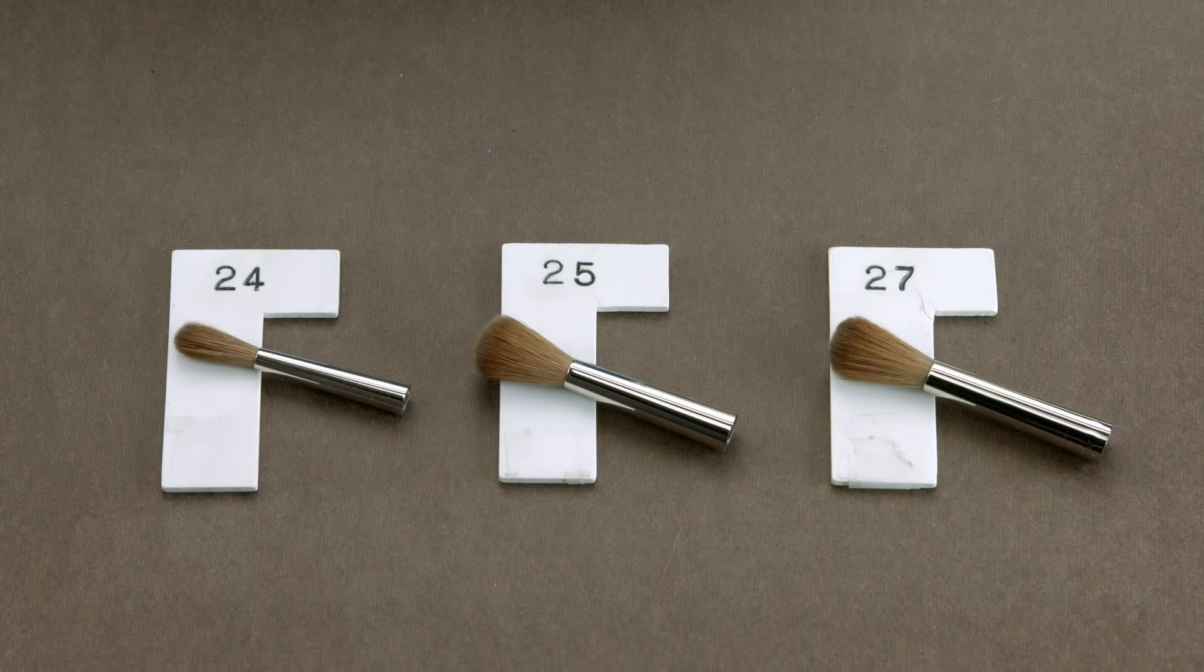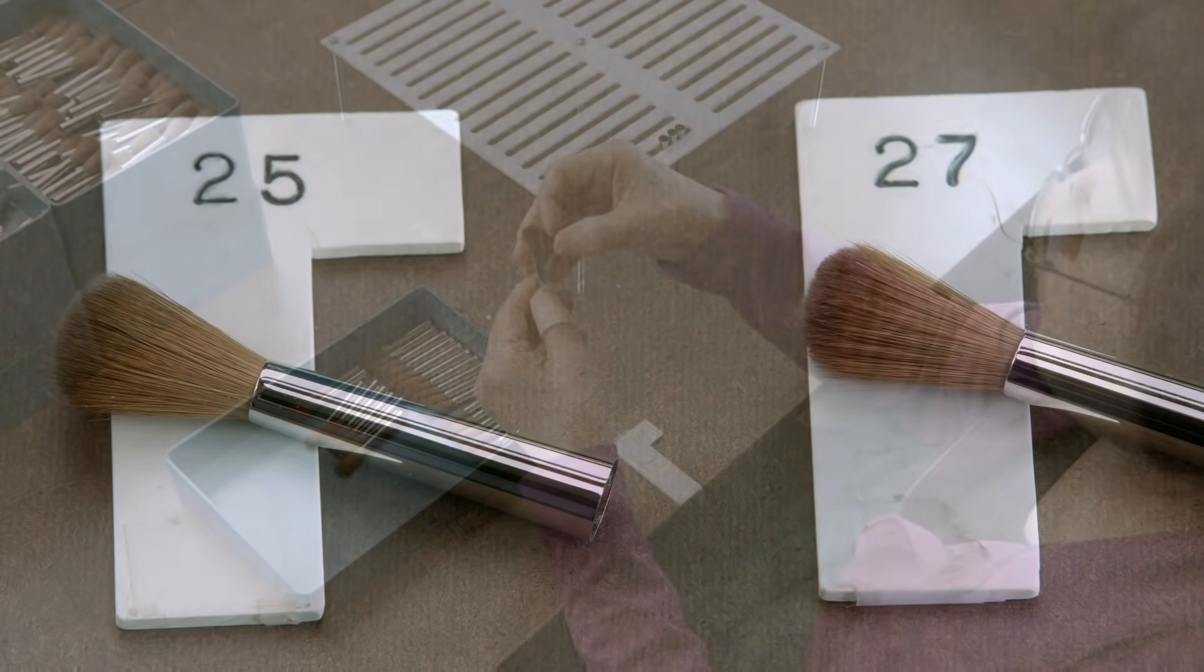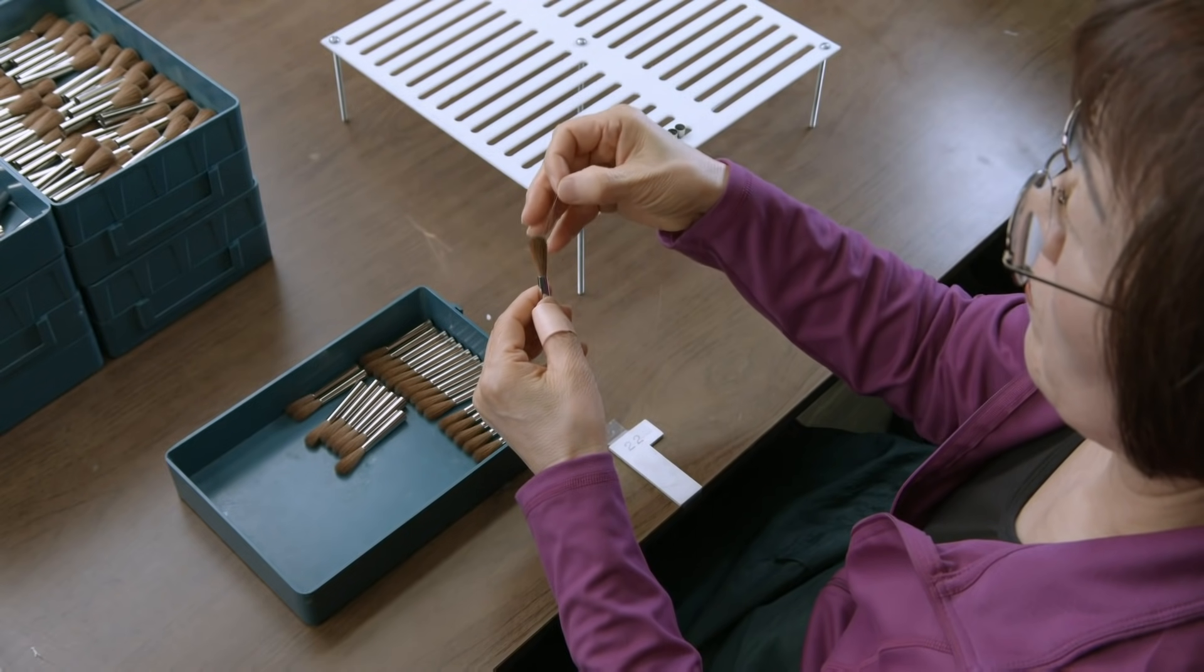Next, using a template, the length out of the brush is adjusted. Length out is how far the hairs protrude from the end of the ferrule.